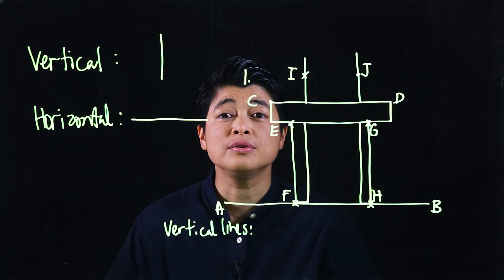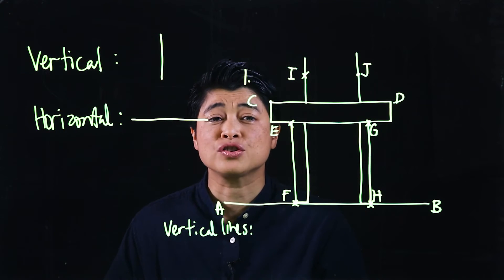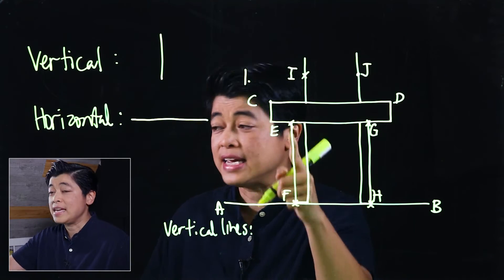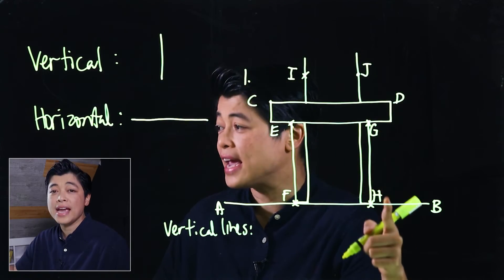The only vertical lines in the picture will be EF and GH, because those are the only lines that we can name that are connected.